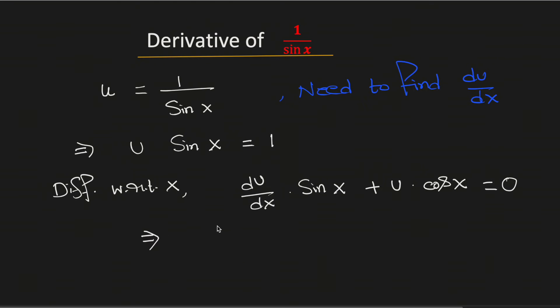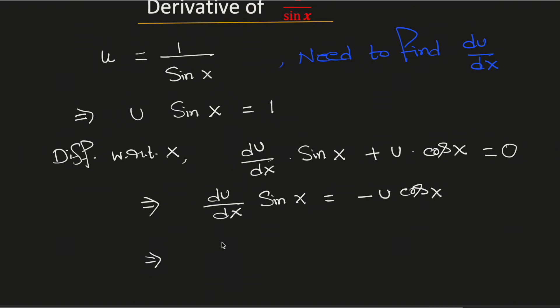From here we get du/dx times sin x equals negative u cos x. So this gives us du/dx equals minus u cos x divided by sin x.